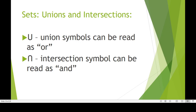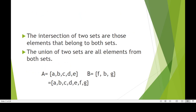Let's proceed to set unions and intersections. The union symbol can be read as 'or', and the intersection symbol can be read as 'and'. The intersection of two sets contains those elements that belong to both sets. The union of sets contains elements from both sets. For example, if set A = {a, b, c, d, e} and set B = {f, b, g}, then A union B = {a, b, c, d, e, f, g}.